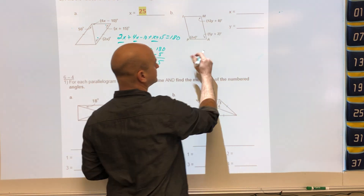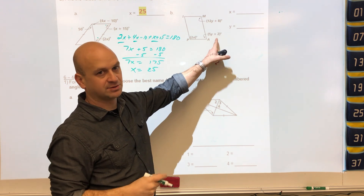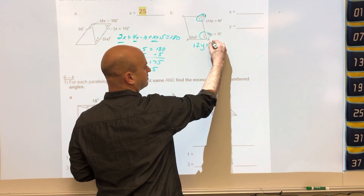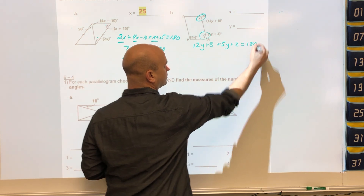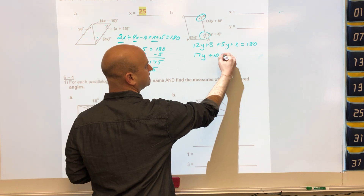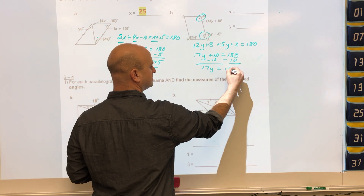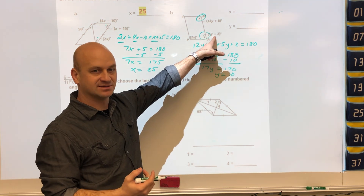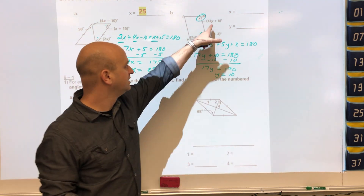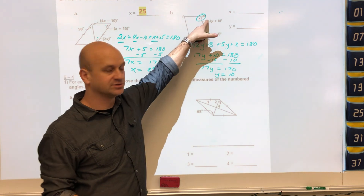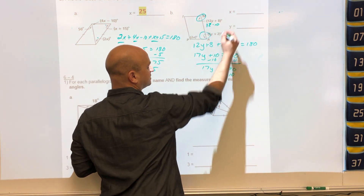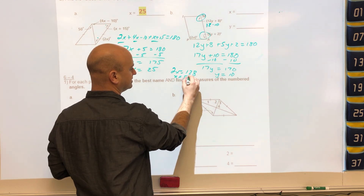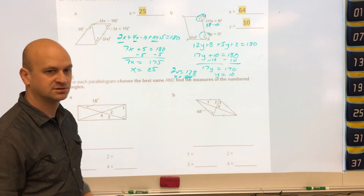This problem has two variables, so we solve for y first then plug it in to find x. These two angles are consecutive, so 12y plus 8 plus 5y plus 2 equals 180. That gives 17y plus 10 equals 180; subtract 10 and y equals 10. Plugging in: 12 times 10 is 120 plus 8 is 128. The opposite angle is congruent, so 2x equals 128 and x equals 64.